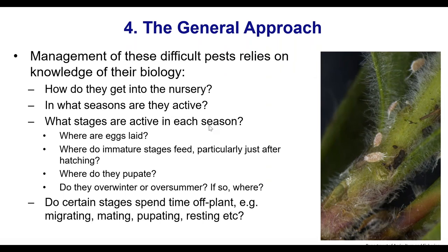Look at the biology: how do they get into the nursery? In what season are they active, and what stages are present in each season? Where are they laying eggs? Where do immature stages feed? Where do they move from — say, the leaf into the growing tip? Where do they pupate — on the plant, off the plant, or inside the plant? Do they emerge through an exit hole? Do they overwinter or over-summer, and if so, where? These things are important to establish where the pest is going so you can better break its life cycle.